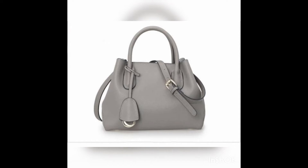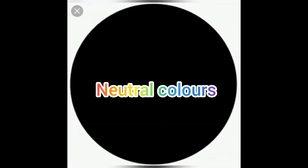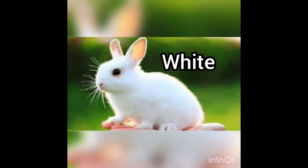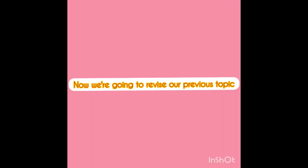We are going to learn neutral colors. Neutral colors are black and white. Black umbrella and white rabbit. Black and white are neutral colors.